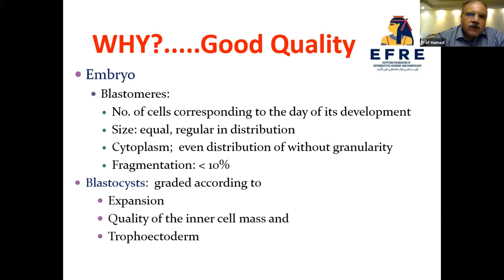By good-quality embryo we mean: the number of blastomeres must correspond to the day of development, the size must be equal and regular in distribution, the cytoplasm must be even, and fragmentation less than 10 percent. For blastocysts, there must be an expanded blastocyst with good-quality inner cell mass and good-quality trophectoderm.